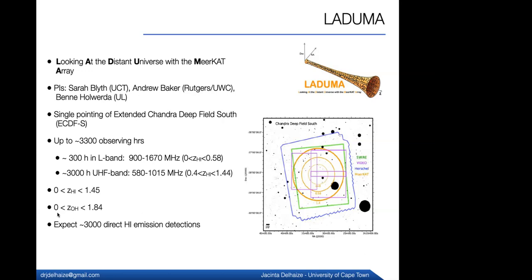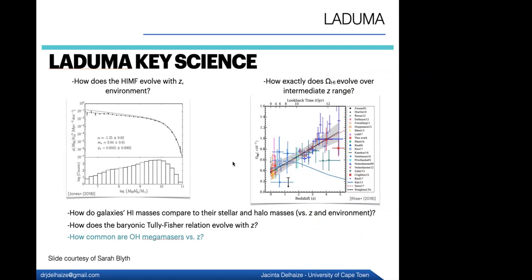So if we're looking at H1, we get out to redshifts of about 1.4. But if we're considering OH megamasers, we can take them out to even further, about 1.8 or so. We expect when the full survey is done that we'll be able to detect about 3,000 direct H1 emission detections. The symbol of LADUMA is this vuvuzela because it represents the shape of the cosmic volume we're probing as we go out to higher redshifts. And I believe LADUMA is what is shouted also at these games, and it means it thunders.